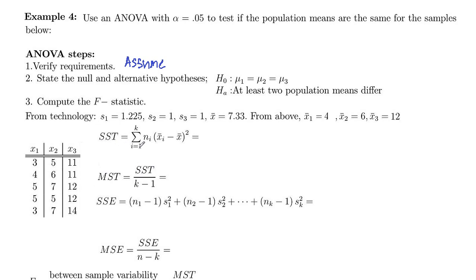So sum of squares of treatments is the sum from 1 to 3, K will equal three groups, sample size times X_i bar minus X bar. So sample size here is 5, and then X1 bar is 4 minus the overall X bar, 7.33, and that gets squared, plus the number of values in the second set is also 5, that mean is 6, so 6 minus 7.33, and that gets squared. And the third sample size is also 5, mean is 12 minus the overall mean of 7.33, and square that. So if you enter that into the calculator, you'll get 173.33.